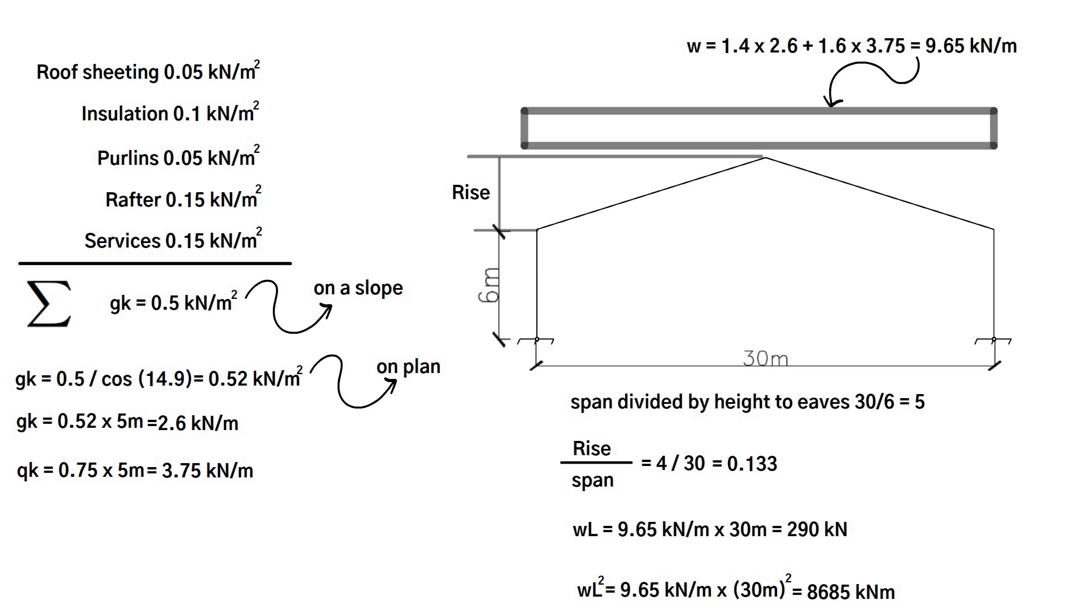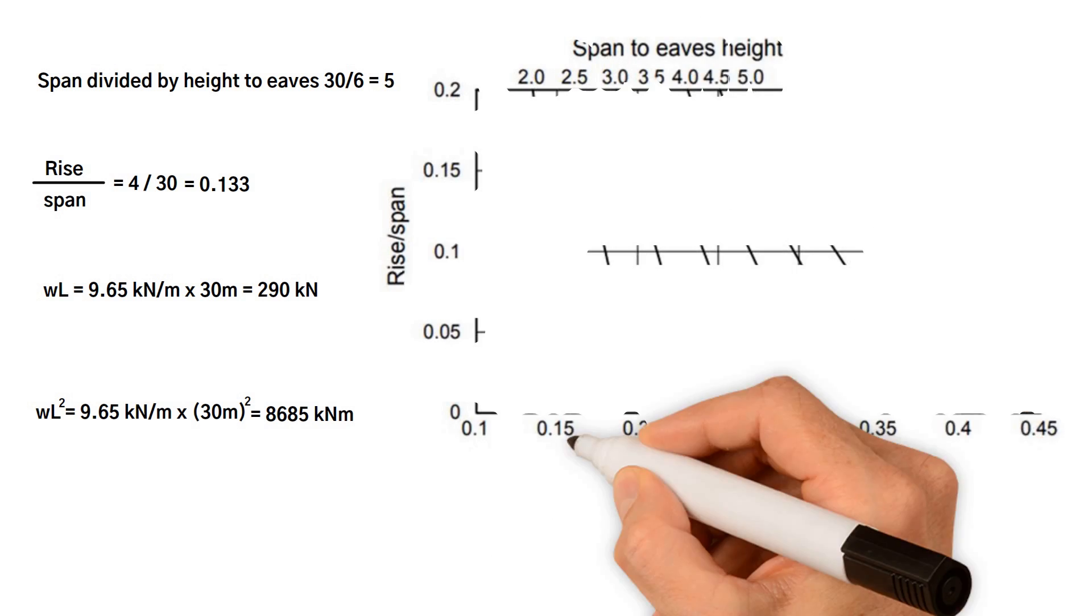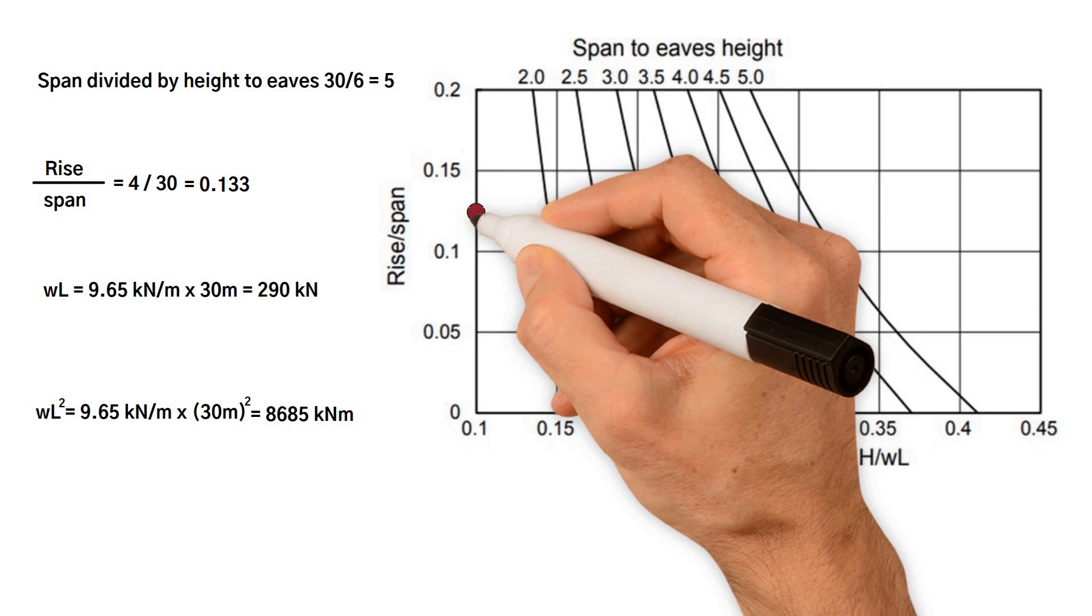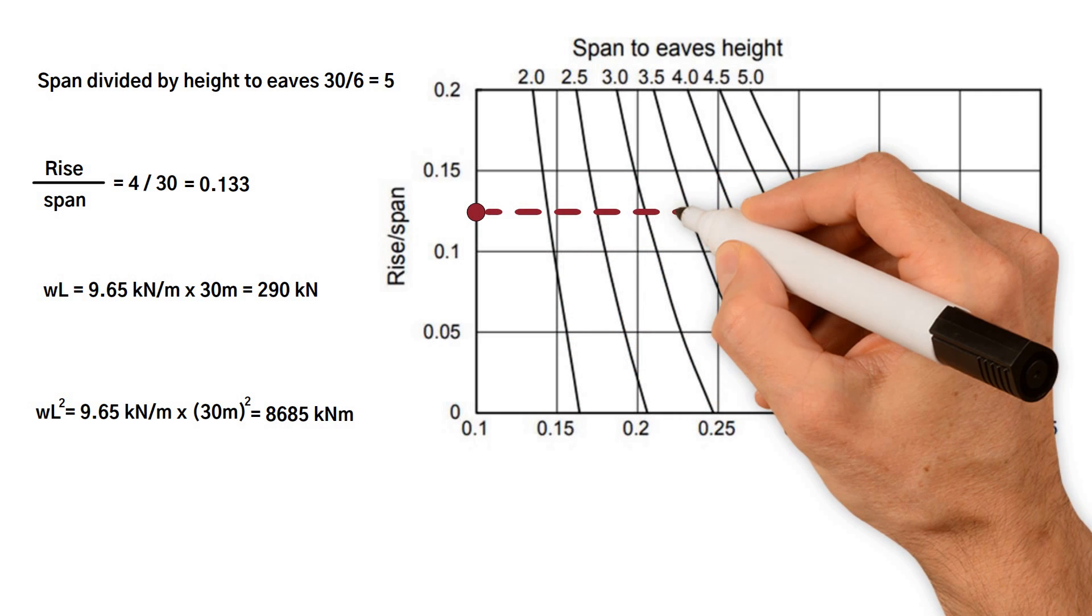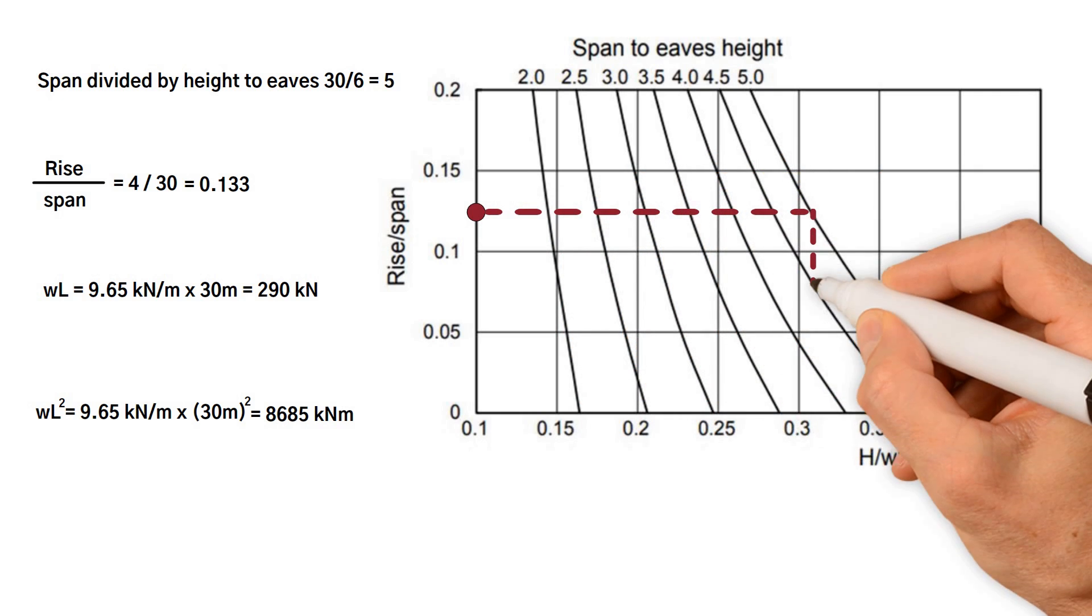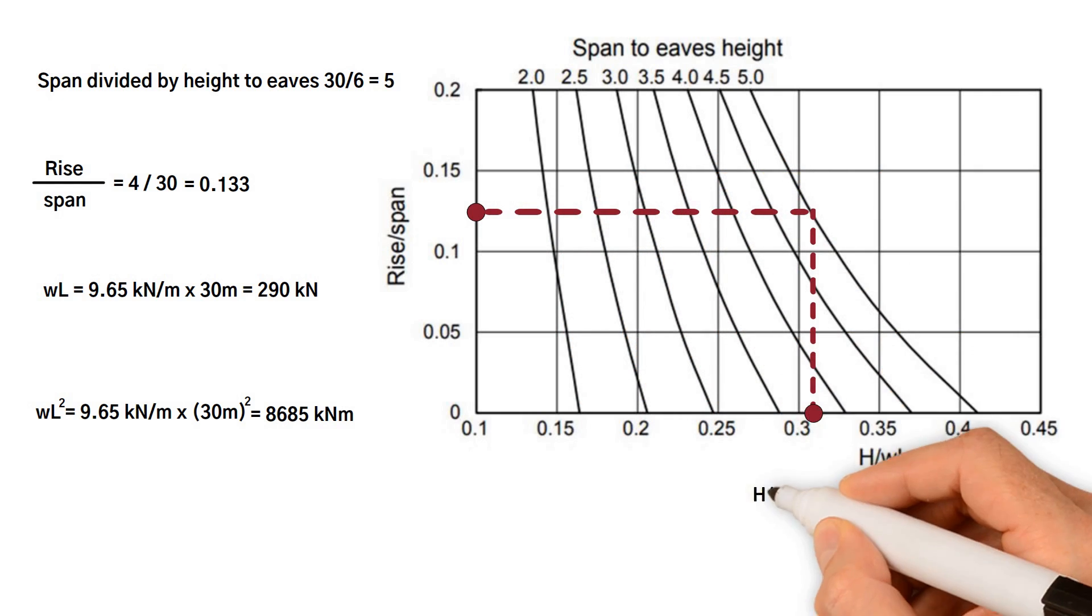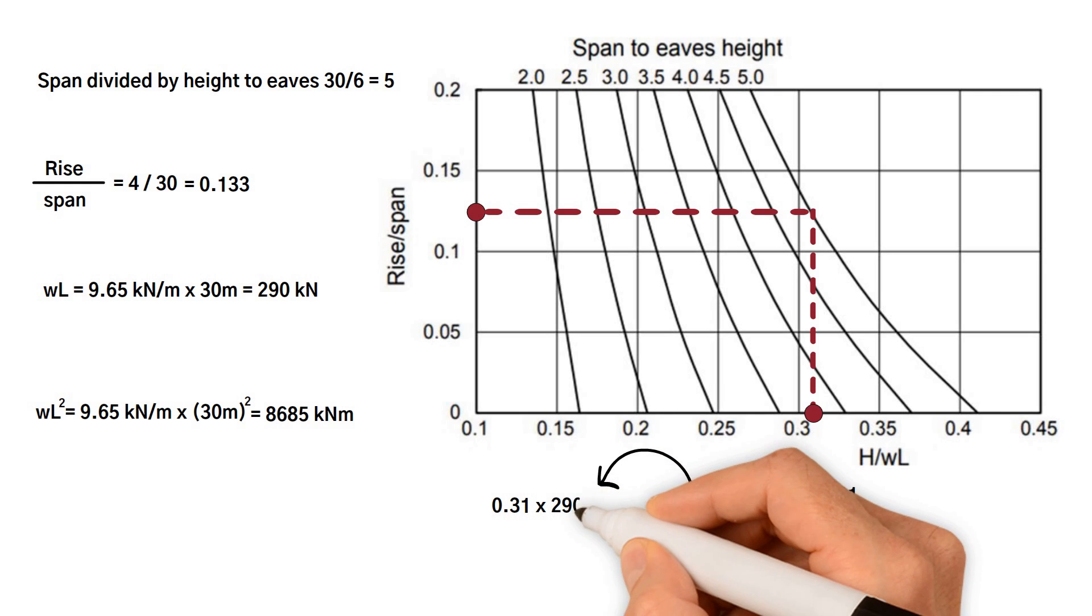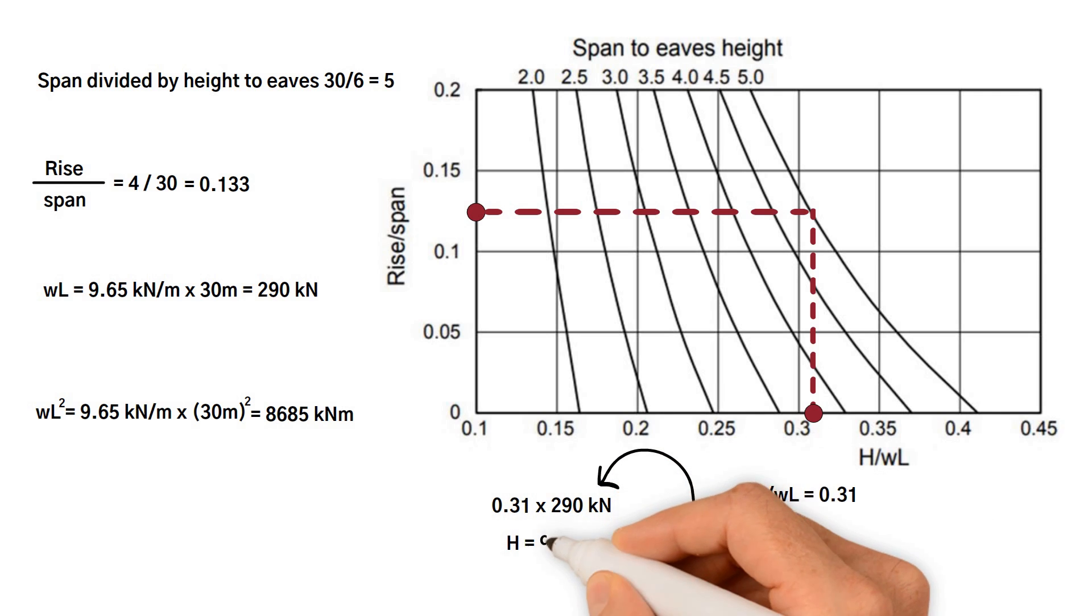From the first graph, we should obtain horizontal thrust at feet. We have rise over span 0.133, and span to eaves height 5 meters. They should meet here, so we have the ratio H over WL equals approximately 0.31. Hence, H equals 0.31 times WL 290 kilonewton, which equals 90 kilonewton.